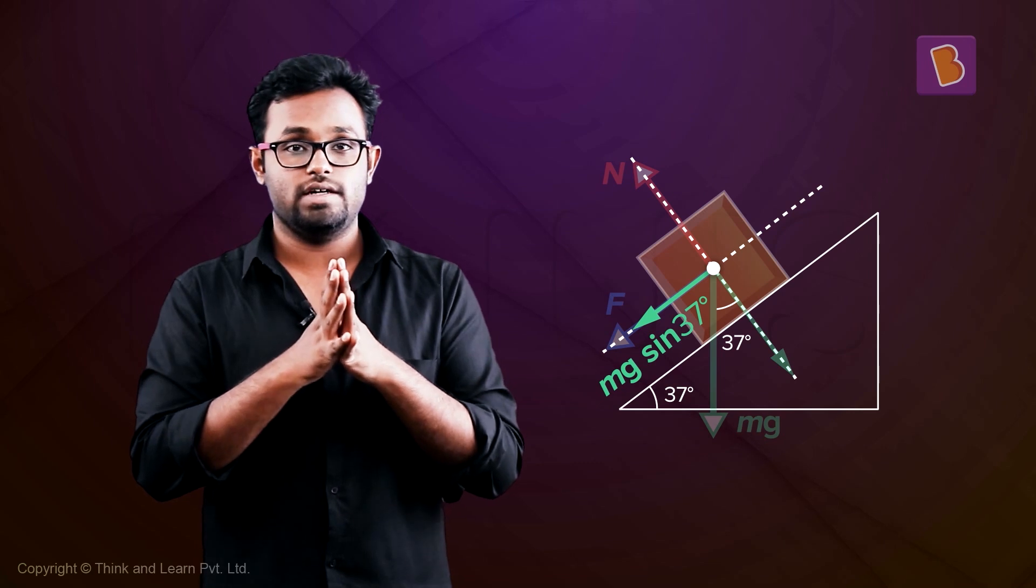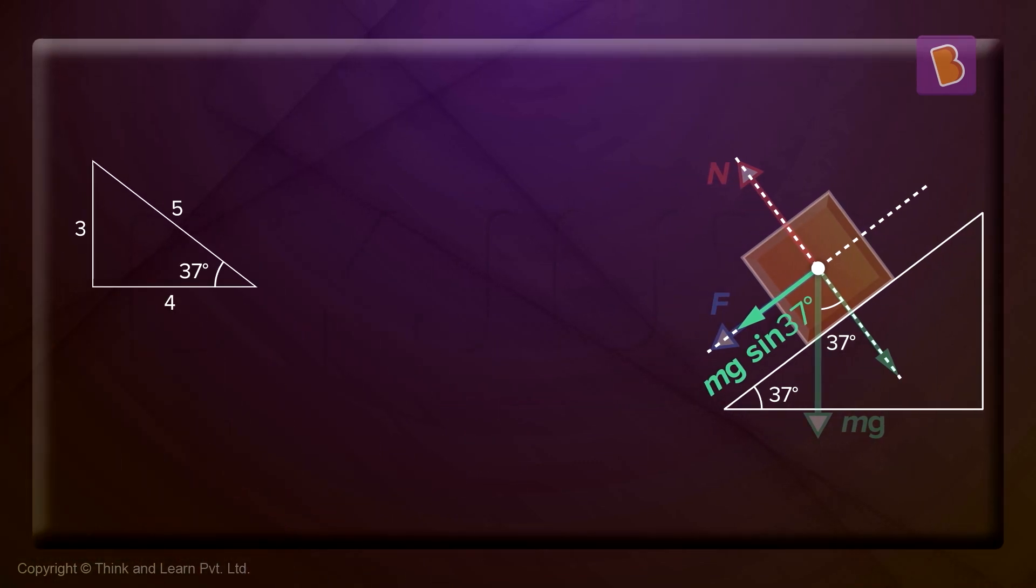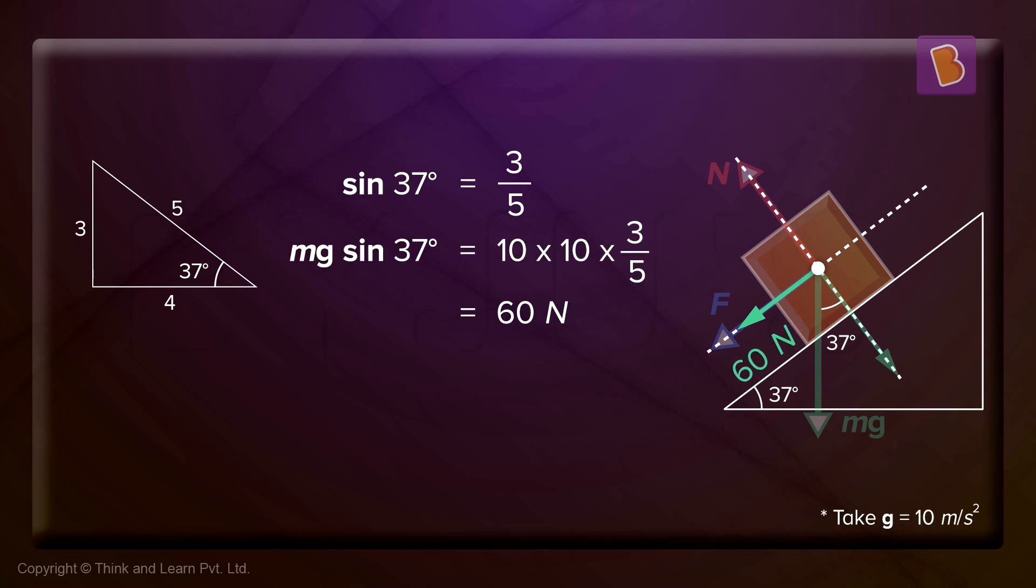And, you know the value of sin 37, right? In a 3-4-5 triangle, yes, sin 37 will be equal to 3 by 5. So, that becomes 60 Newtons.